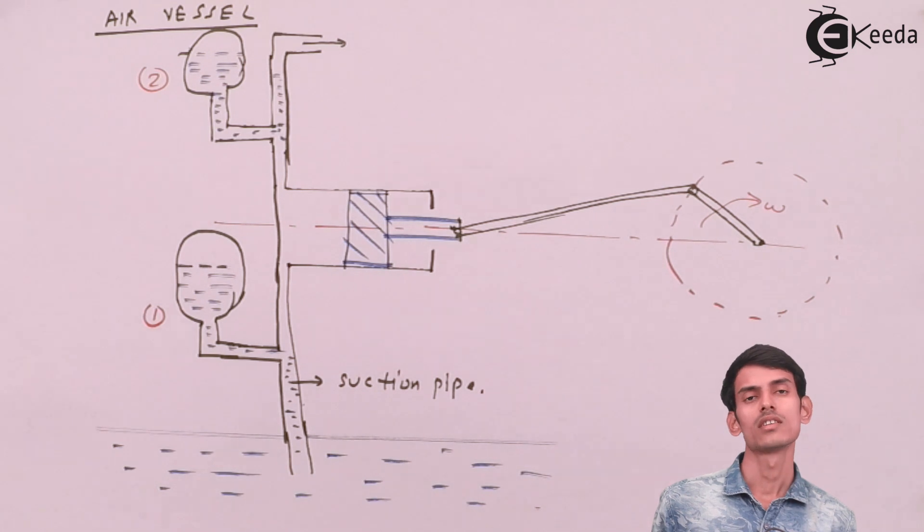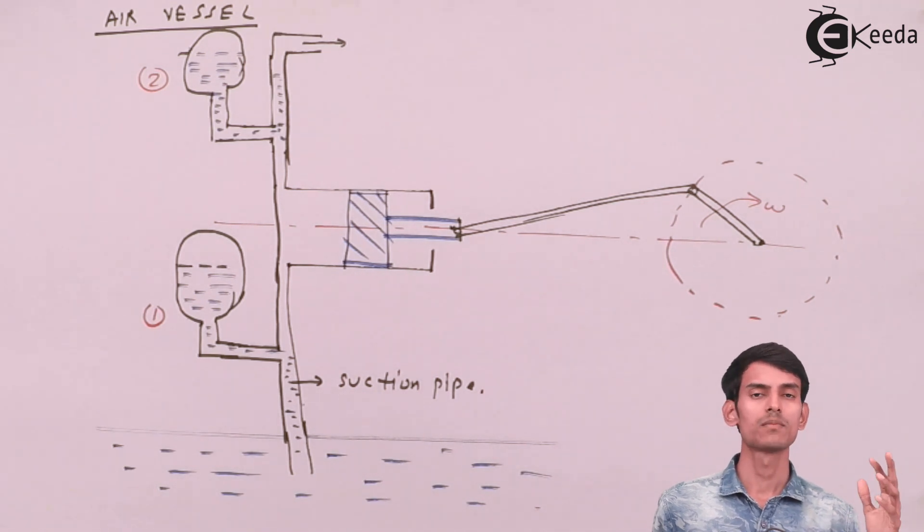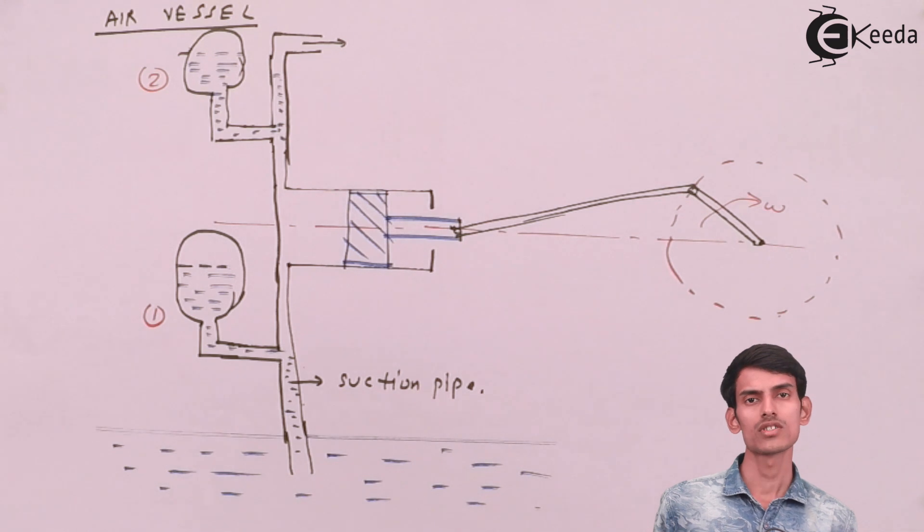So suppose the discharge is not continuous, the pressurized air in the air vessel pushes the water in the air vessel, makes the discharge continuous. So that is also the effect created because of air vessel.